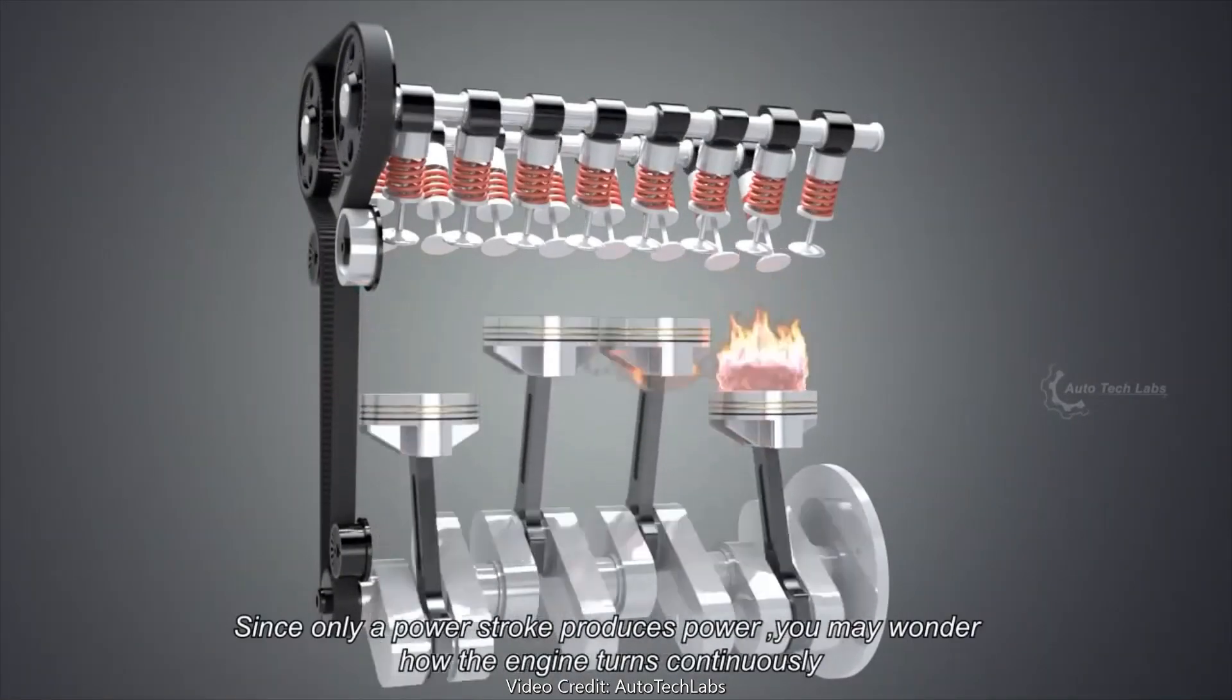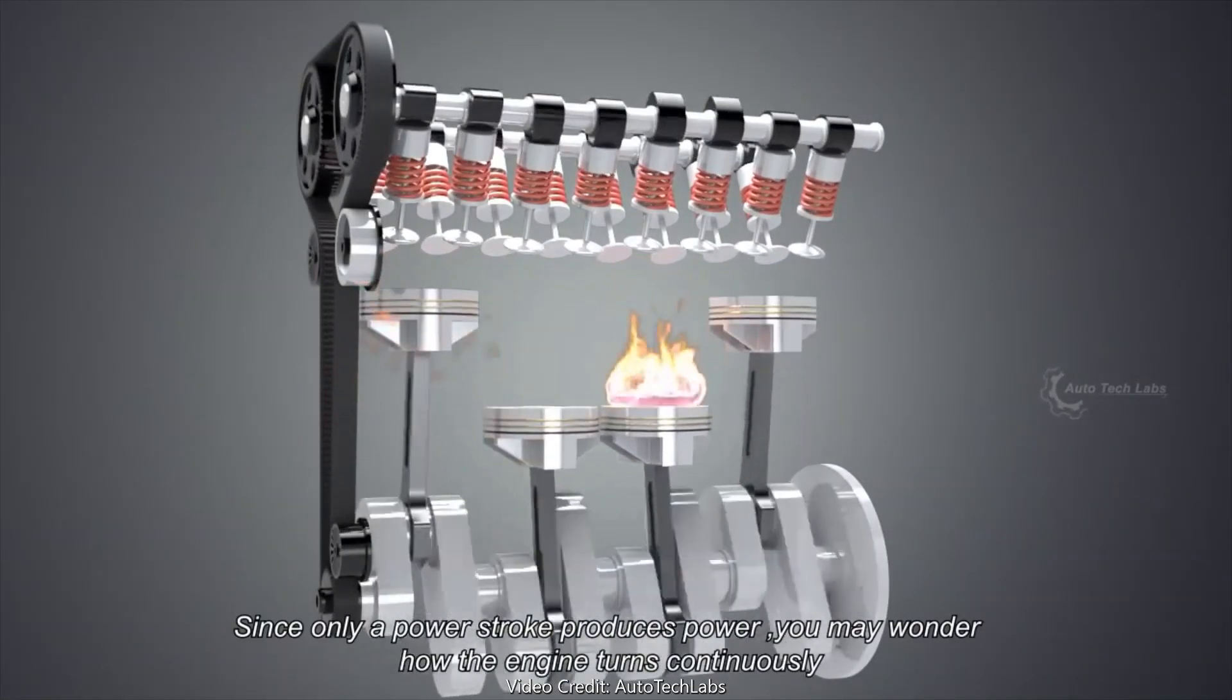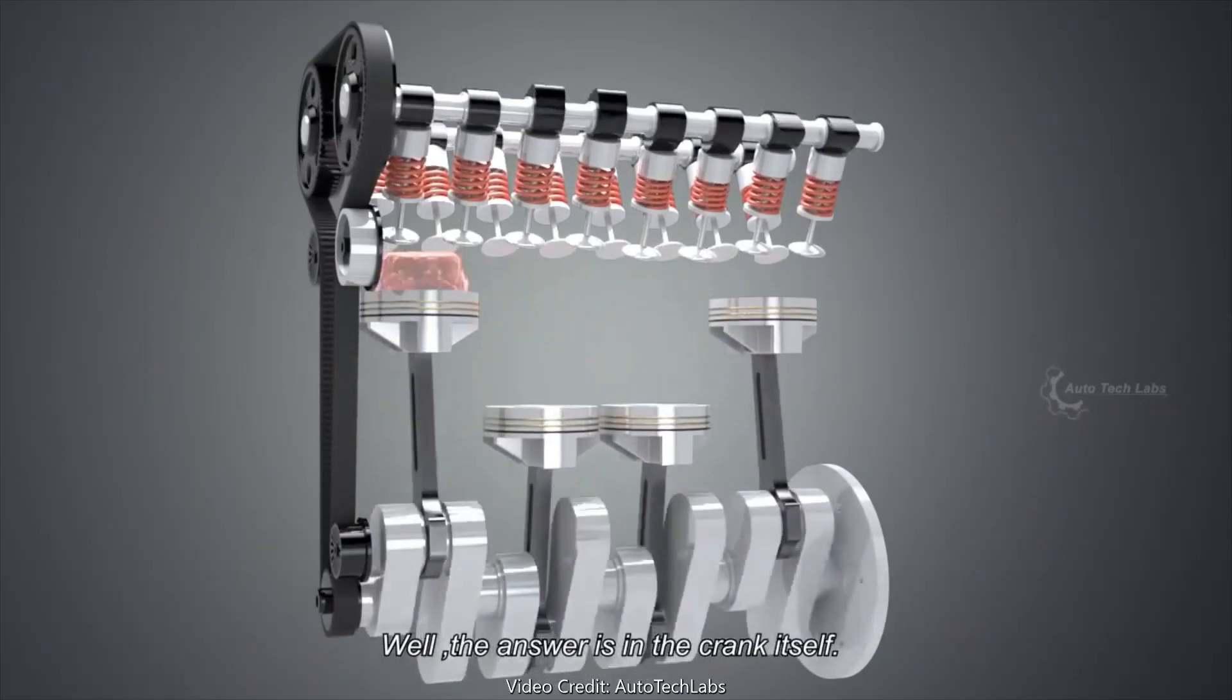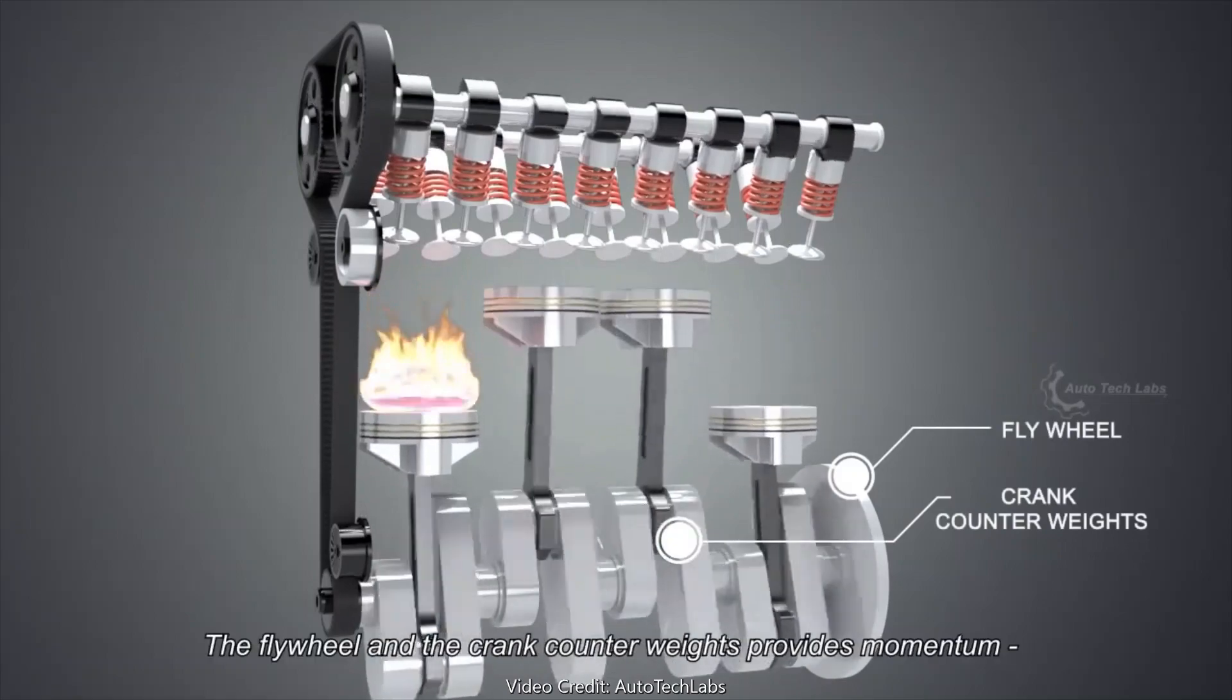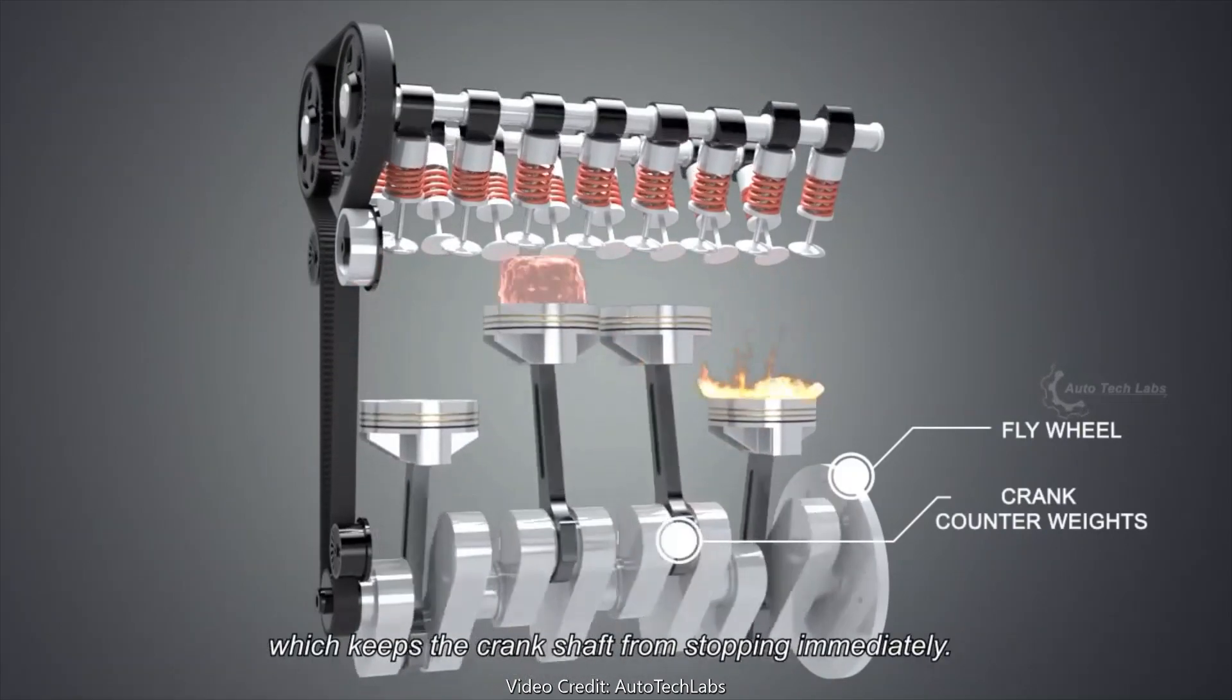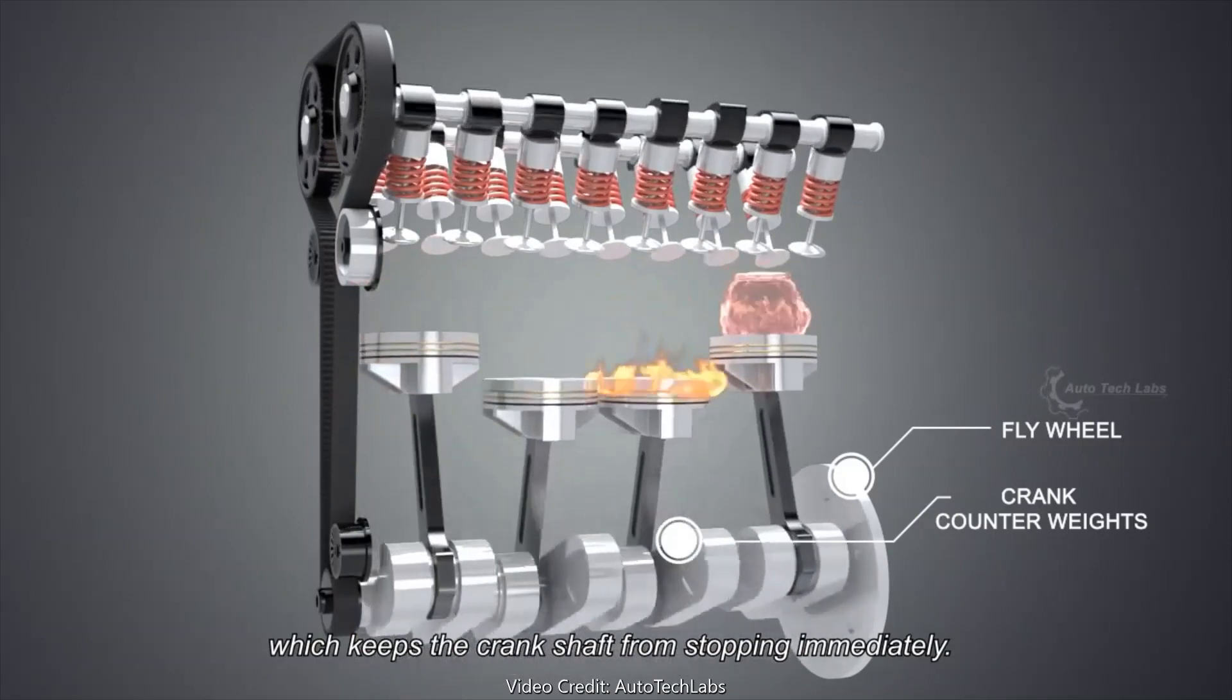Since only a power stroke produces power, you may wonder how the engine turns continuously. Well, the answer is in the crank itself. The flywheel and the crank counterweights provide momentum, which keeps the crankshaft from stopping immediately.